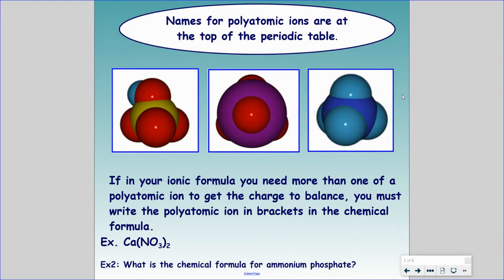You have a periodic table, and at the very top there is a chart with all the polyatomic ions we are going to be working with, so you don't have to memorize them. We're going to practice lots with them. Like ionic compounds, you balance charges on both the positive and negative sides until they equal a net charge of zero. Polyatomics aren't any different, except that most polyatomic ions already have subscript numbers attached to them.